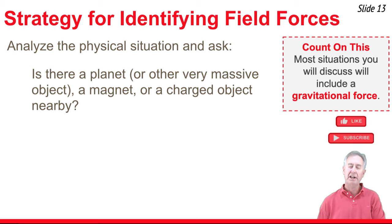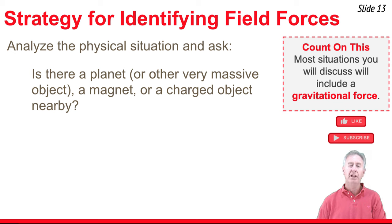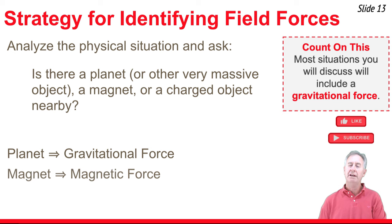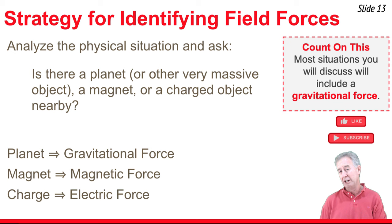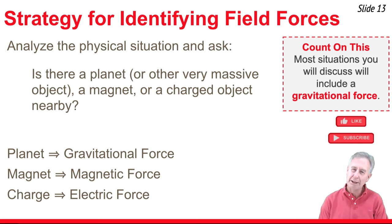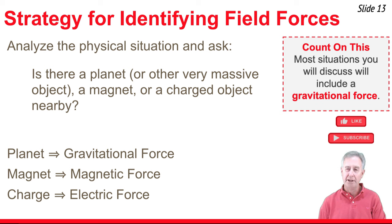Now let's talk about a strategy for identifying field forces — and it's a pretty simple one. We ask: is there a planet or other massive object, a charged object, or a magnet nearby the object in question? If there's a planet nearby, there's a gravitational force. If there's a magnet nearby, there's a magnetic force. If there's a charged object nearby, there's an electric force. Of these three, you should almost always count on a gravitational force being present, since the situations we analyze are typically done on planet Earth.